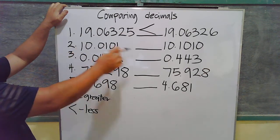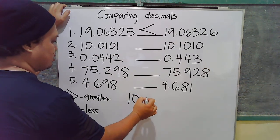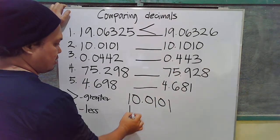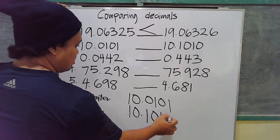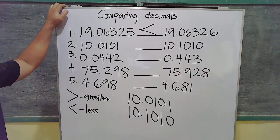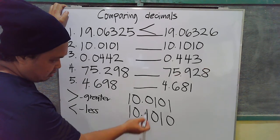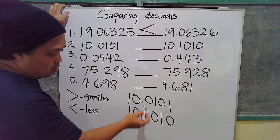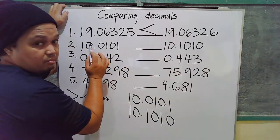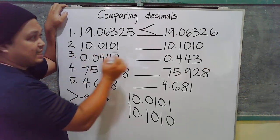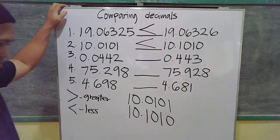For number two, to answer it quickly, let's align them: 10.0101 and 10.1010. Now let's compare — 1, 1 the same; 0, 0 equal; decimal point aligned. Now 0 here and 1: 1 is greater. So this number is greater than this number, meaning this decimal number is less than this decimal number because that 1 is greater.